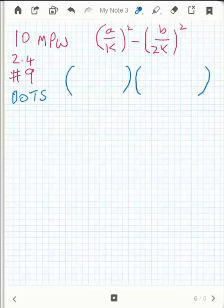The square root of a on k all squared is a on k. So a on k goes there, and it goes there. Plus, minus. The square root of the second bracket, b on 2k all squared, is b on 2k. So b on 2k, and minus b on 2k. So that's using the difference of two squares to factorize.